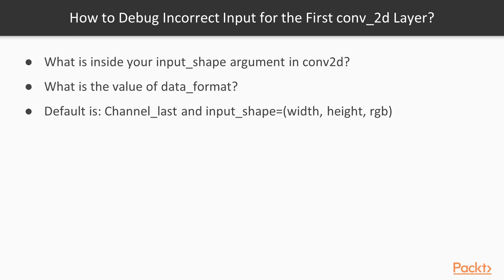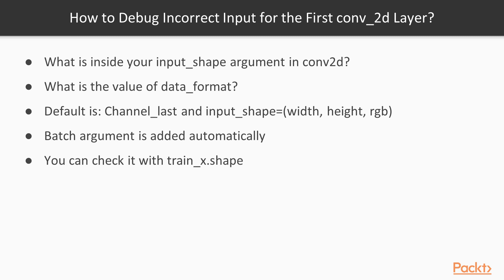When talking about input_shape, remember that the batch argument is added automatically. You'll get a strange-looking error if you include the batch size in your data — you have to exclude it and only provide width, height, and the channel value. To check how your data looks, you can use the shape argument on your data. Chances are your input data is a numpy array, so it has a shape attribute that shows the dimensionality. Make sure to check not only your X input data but also your Y training labels, and confirm that your data has exactly the dimensionality you've provided in input_shape.